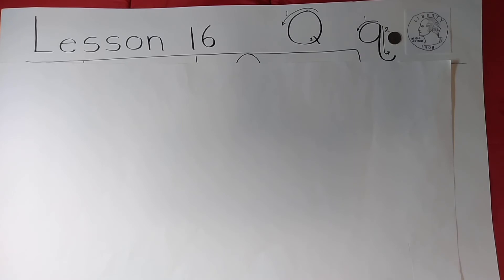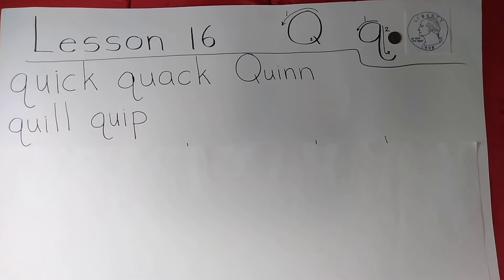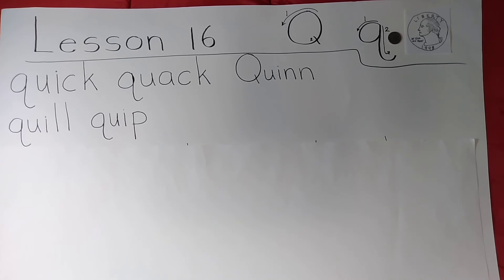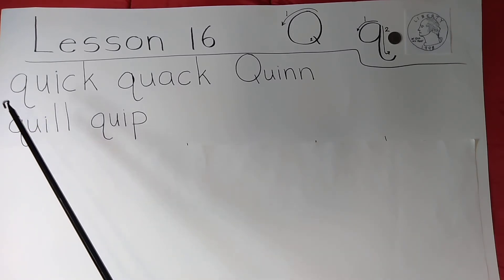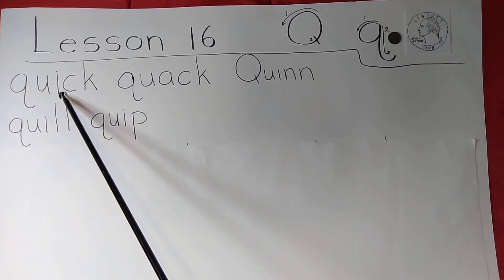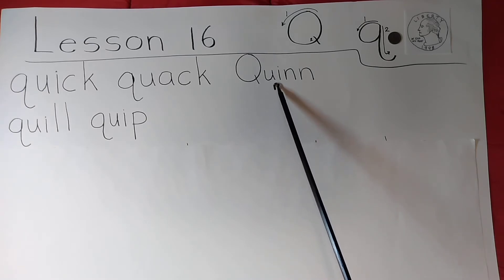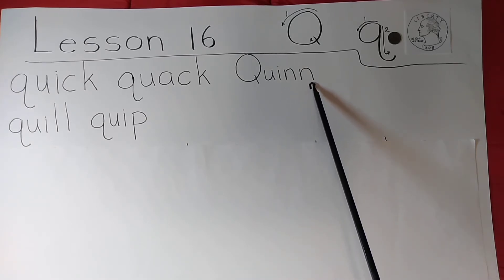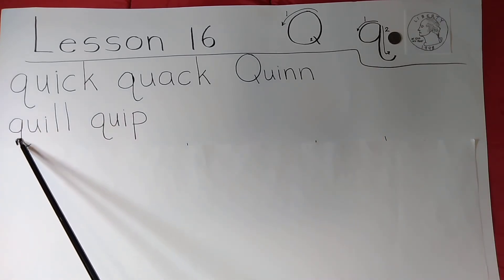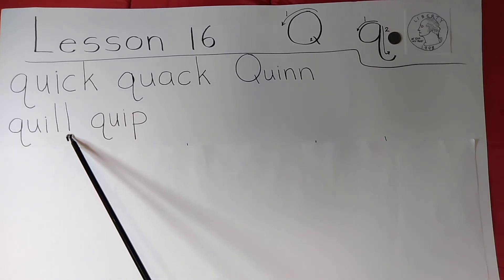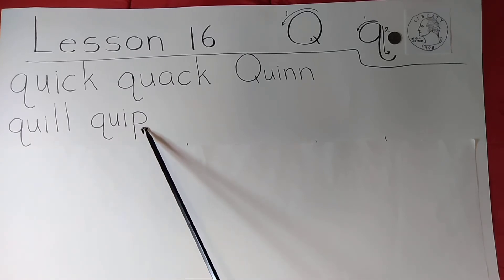Go ahead and use pause. Now we're going to go over the new words. Here they are. Q-U-I — quick. Q-U-A — quack. Q-U-I-N-N — Quinn. Quinn is a boy's name. Q-U-I-L-L — quill. Q-U-I-P — quip.